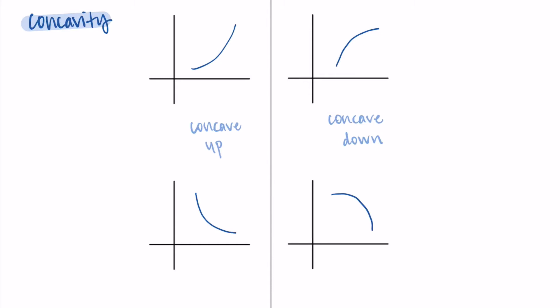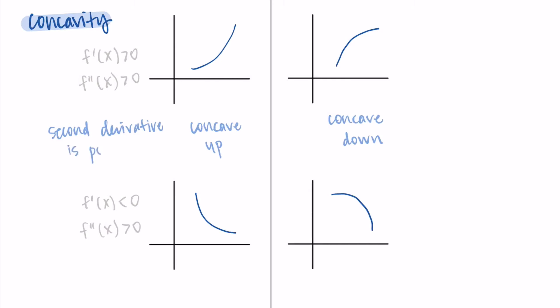On the right I have the concave down graphs — like a cup or cave facing down. On the concave up graphs, the first derivative can be positive or negative, but what they have in common is that the second derivative is positive. The slopes are becoming more positive — increasing over time. So what you really need to remember is: concave up corresponds to a positive second derivative. I've just been explaining the process of why that's true.